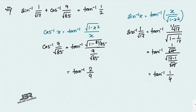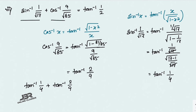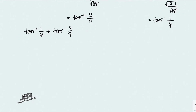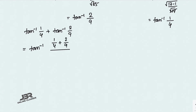So sin⁻¹(1/√17) + cos⁻¹(9/√85) becomes tan⁻¹(1/4) + tan⁻¹(2/9). Applying the tan⁻¹(x) + tan⁻¹(y) formula: numerator = 1/4 + 2/9 with LCM 36, giving 9/36 + 8/36 = 17/36; denominator = 1 − (1/4)(2/9) = 1 − 2/36 = 34/36.